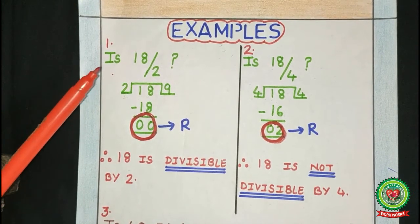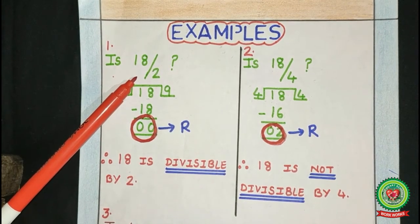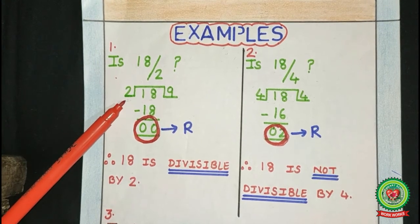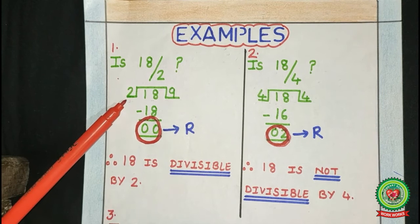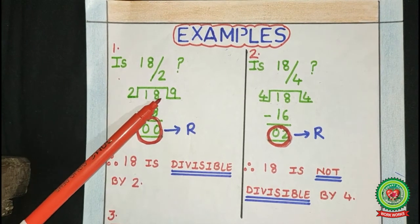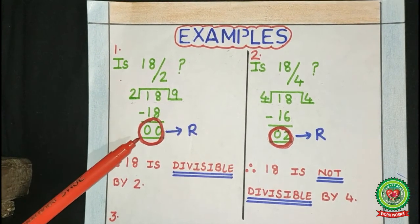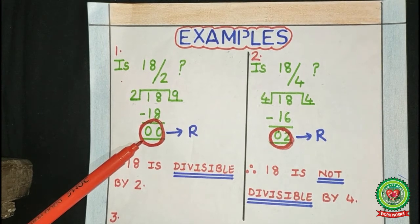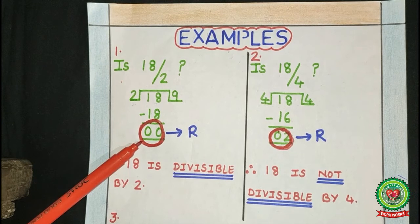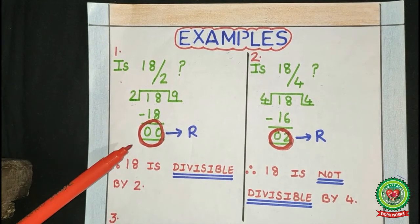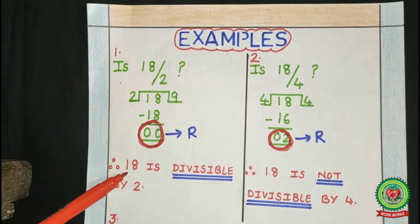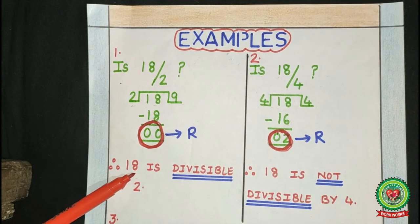Example number 1: Is 18 divisible by 2? We check it by division. When we divide 18 by 2, the quotient here is 9 and the remainder here is 0. When the remainder is 0, the given number is divisible by another number. In this example, remainder is 0. Therefore, we can say that 18 is divisible by 2.